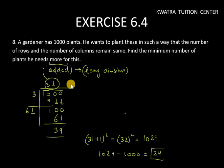This means 24 must be added to make rows and number of columns same. 24 more plants are needed so that the gardener can make them equal. So that's your answer for question number 8. Thank you for watching this.